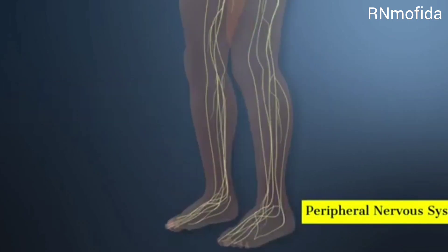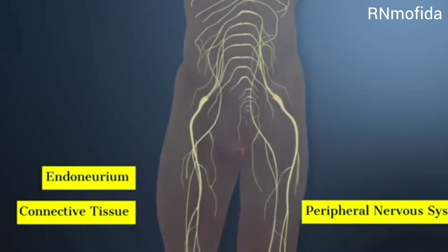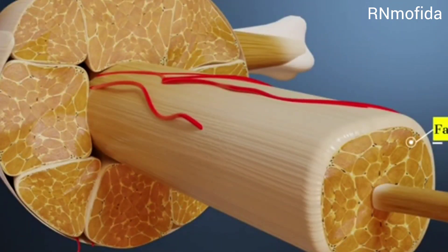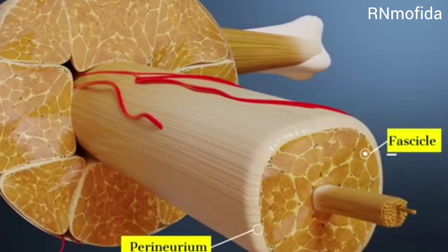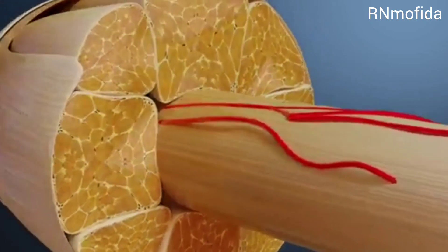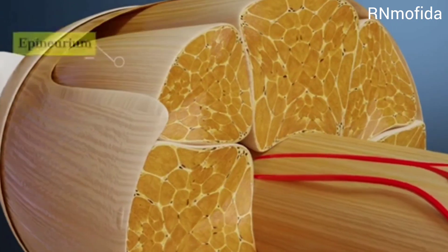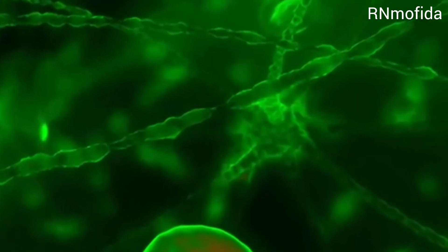The axons in the PNS form the nerves. Every nerve is covered by a thin layer of connective tissue known as endoneurium. A collection of axons is called fascicles, covered by perineurium. All the fascicles in the nerve form a bundle and are covered by the connective tissue covering called epineurium.